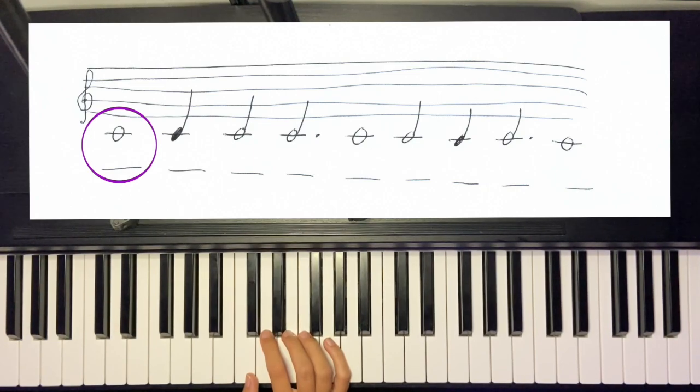So when C looks like it does with just a line across it and no other lines attached to it, it lasts for four counts. Like this. One, two, three, four. You can do that a couple of times to get used to it.